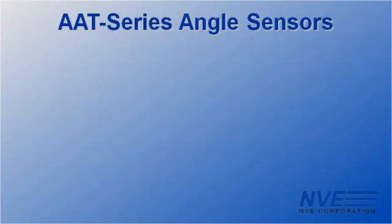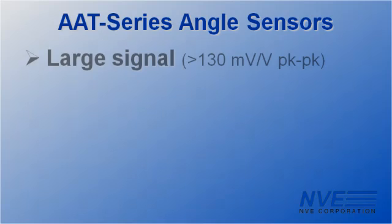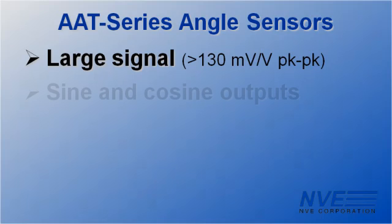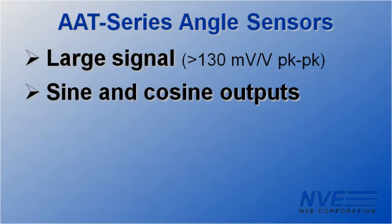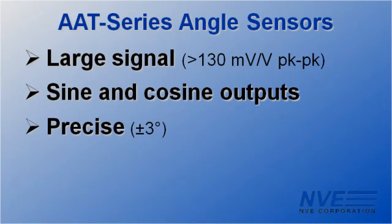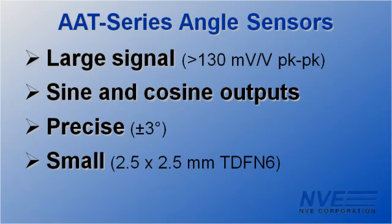So to sum up, we've demonstrated that AAT sensors are ideal for closed-loop control. These sensors have large output signals, sine and cosine outputs provide quadrature, they're precise, and they come in an ultra-miniature package.